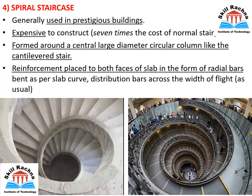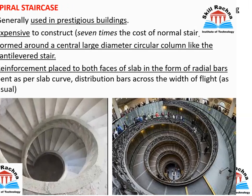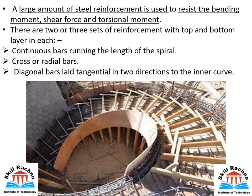The spiral staircase is one of the best-looking staircases in every respect. It is generally used for prestigious buildings and is very expensive — on average seven times more costly than a normal staircase. It is formed around a central large-diameter circular column, like a cantilever staircase. Reinforcement is placed on both faces of the slab in the form of radial bars. A large amount of steel reinforcement is used to resist bending moment, shear force, and torsional moment, including ring beams on both the inner and outer sides, continuous bars along the spiral length, and radial cross bars.